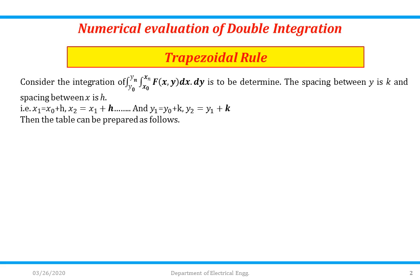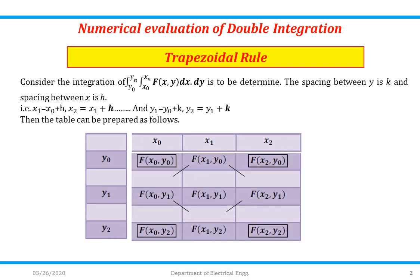We have to prepare a table. Write y0, y1, y2 along one axis and x0, x1, x2 along the other. The given function f(x,y) is evaluated at all combinations. When we put x=x0, y=y0 we get the corresponding value; x=x1, y=y0 gives the next value; x=x2, y=y0 gives the next, and so on for f(x0,y2), f(x1,y2), and f(x2,y2).